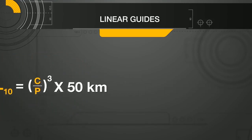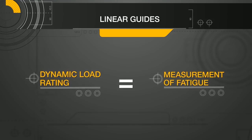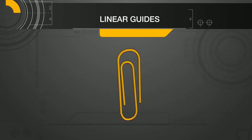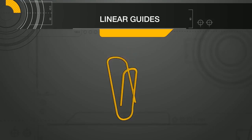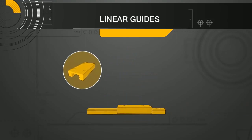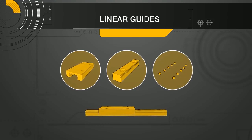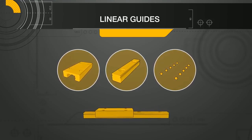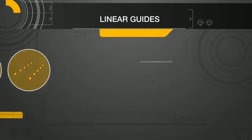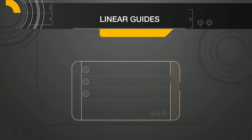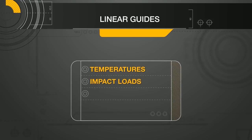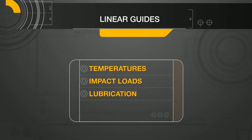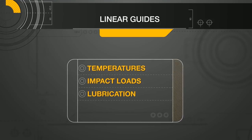It is important to note that the basic dynamic load rating is a measure of fatigue. Much like a paper clip being bent back and forth to the point of breaking, the material of the linear bearing block, rail, and balls can only handle so many cycles of loading and unloading before the material starts to flake away. As a measure of fatigue, it does not directly account for temperatures, impact loads, lubrication, etc., although many manufacturers have correction factors that you can use for approximations.